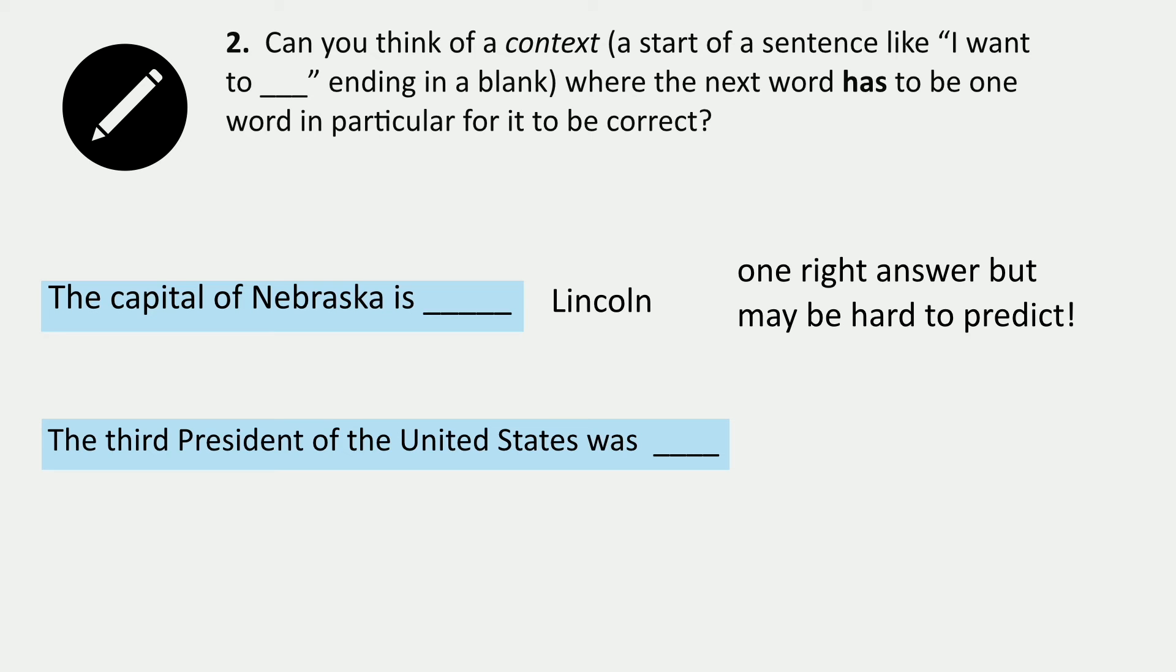Another example of this is 'the third president of the United States was blank.' Once again, this might be an example where you think that there's only one option. In fact, there's a few, right? We could say Thomas Jefferson. We could just go with Jefferson. We could say one of the founding fathers, or we could say a slave owner. Right? So there's a few different ways of continuing this. But in any case, it's still much less open-ended than what we saw to start with.